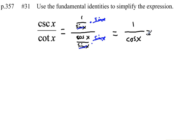Now we can go one more step here, because we know that 1 over the cosine of x is equal to the secant of x. So that entire expression simplifies to the secant of x.